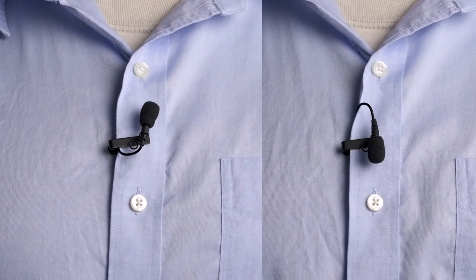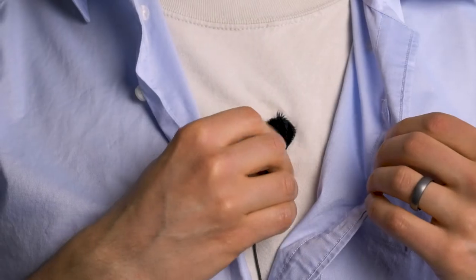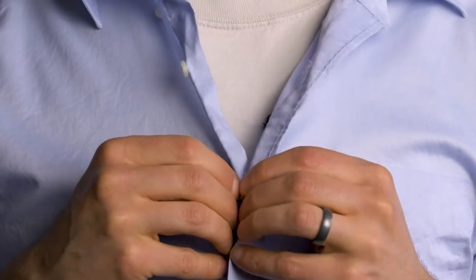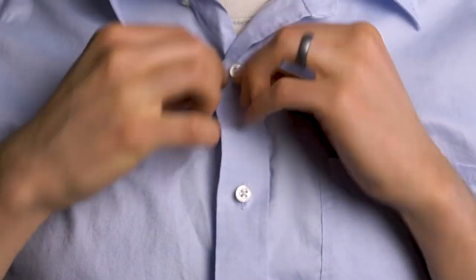Most lav mics are omnidirectional, so you don't have to worry about which way the capsule is facing. If you want to hide the mic, you can use felt stickies to place it under their clothing. The felt prevents the sound of the clothing from rubbing against the mic, creating a rustling noise.